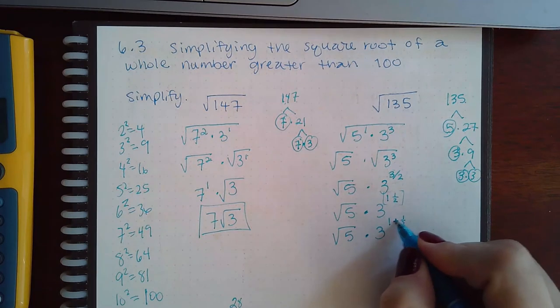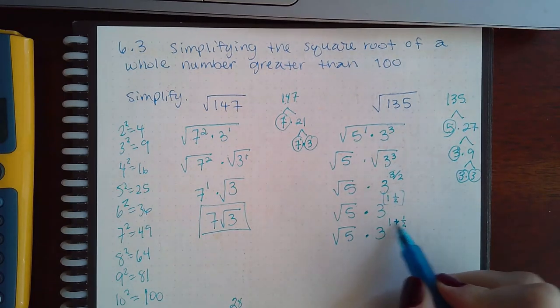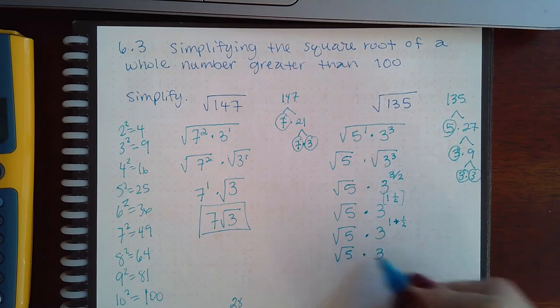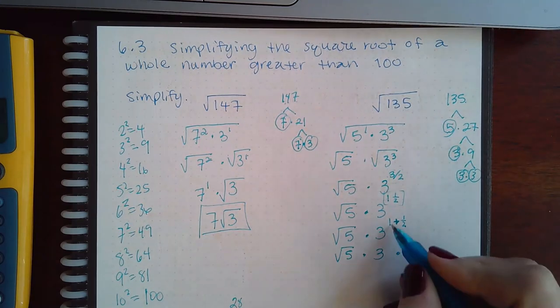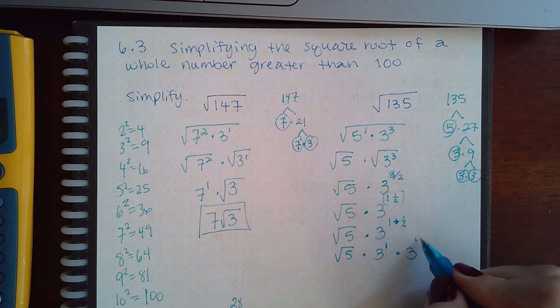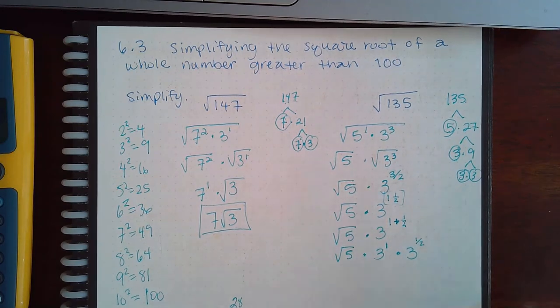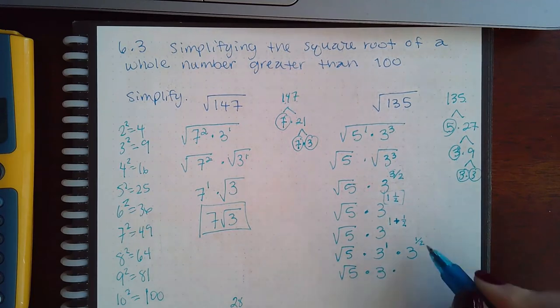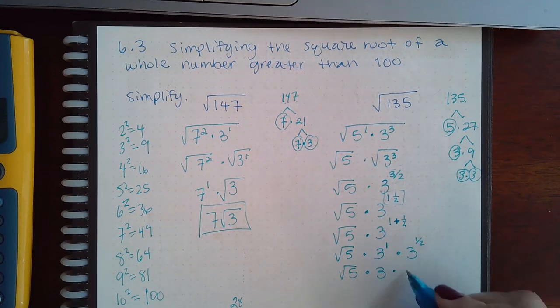That's what 1 and a half means—it means 1 plus a half. We know from our exponent rules that you only add exponents when the bases are the same and there's multiplication going on, so this exponent would be 1, that exponent would be 1 half. So I've got the square root of 5 times a regular 3, and then I have 3 to the 1 half which is the square root of 3.